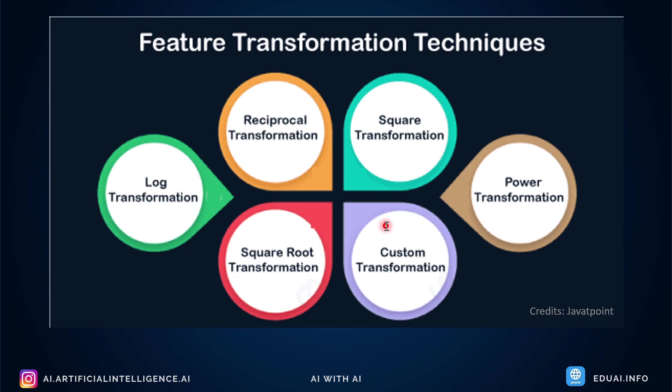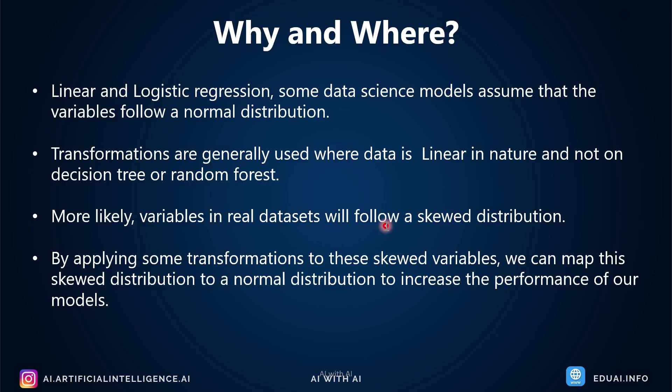Let me tell you why and where you should use feature transformation techniques so we are clear on when to use and when not to use them. For linear and logistic regression, some data science models assume that variables follow a normal distribution, but this may not be true for raw data — we don't know the nature of the data. That's why I always suggest plotting the data to understand its nature. These transformations are generally used where data is linear in nature, and not on decision trees or random forest algorithms. Most of the time, variables in real datasets follow skewed or biased distributions. By applying these transformations, we can map skewed distributions to normal distributions and increase the performance of our model.